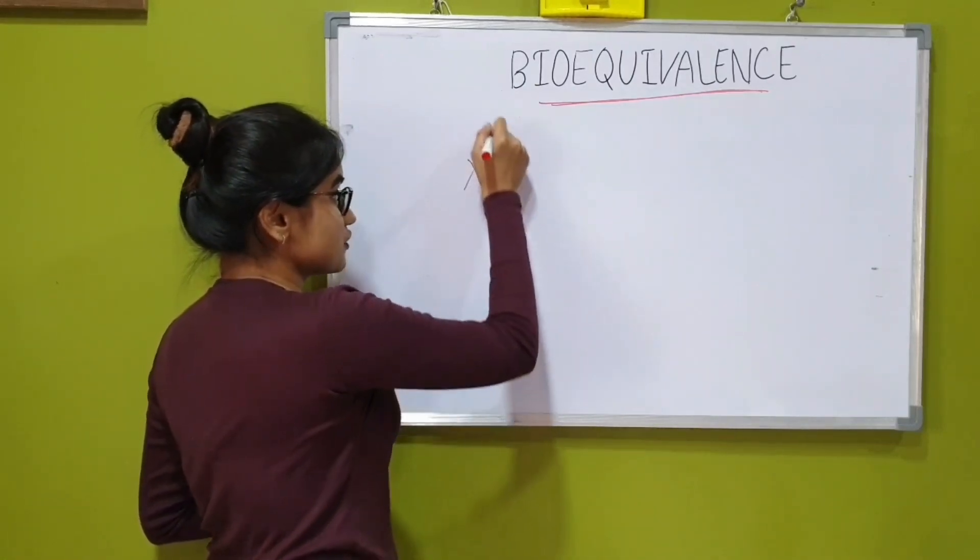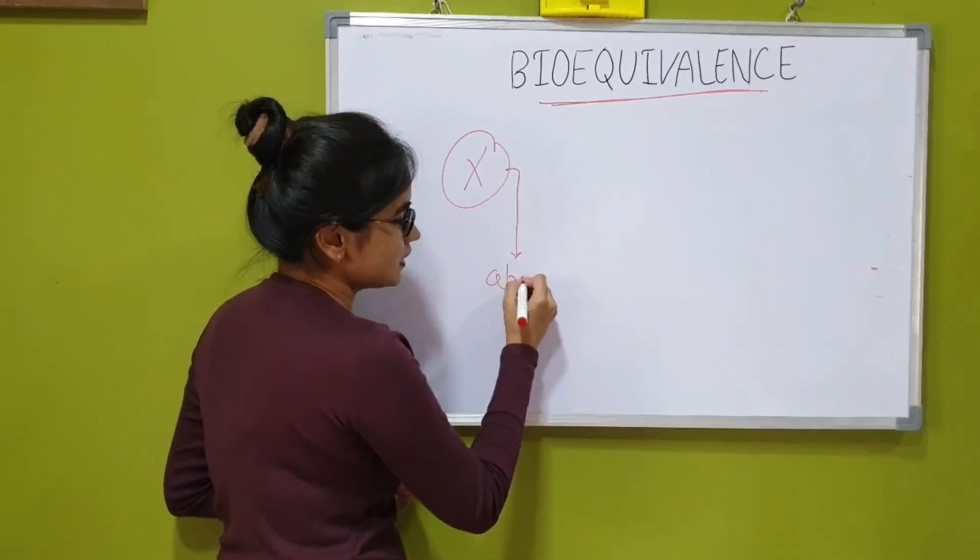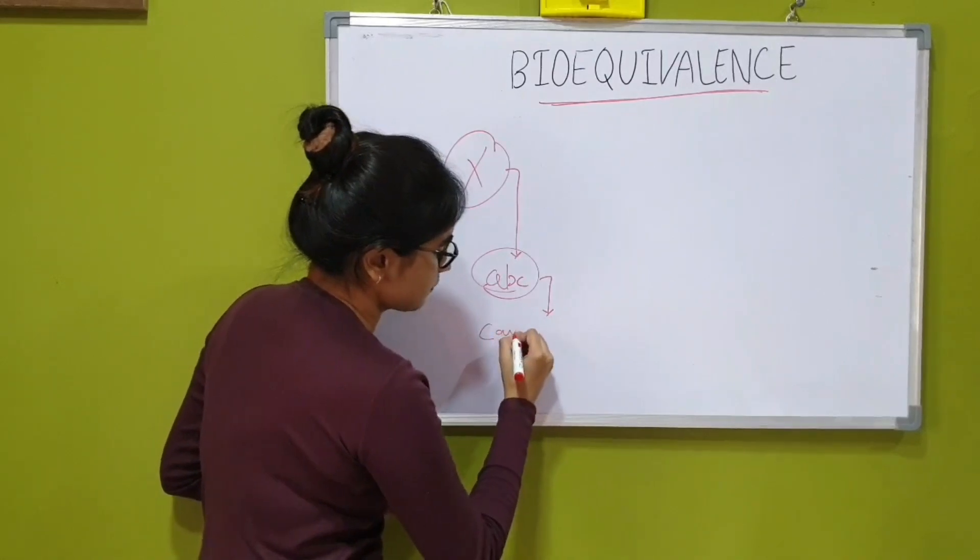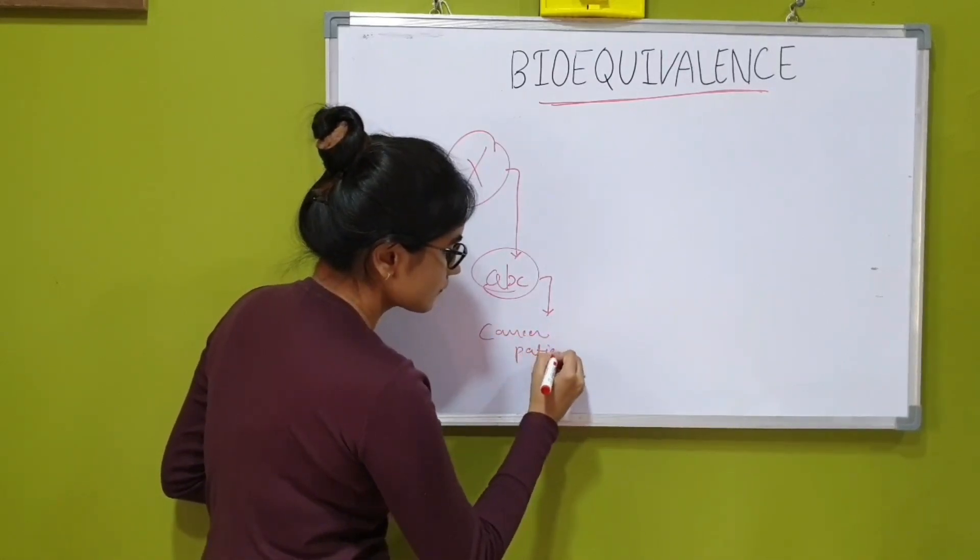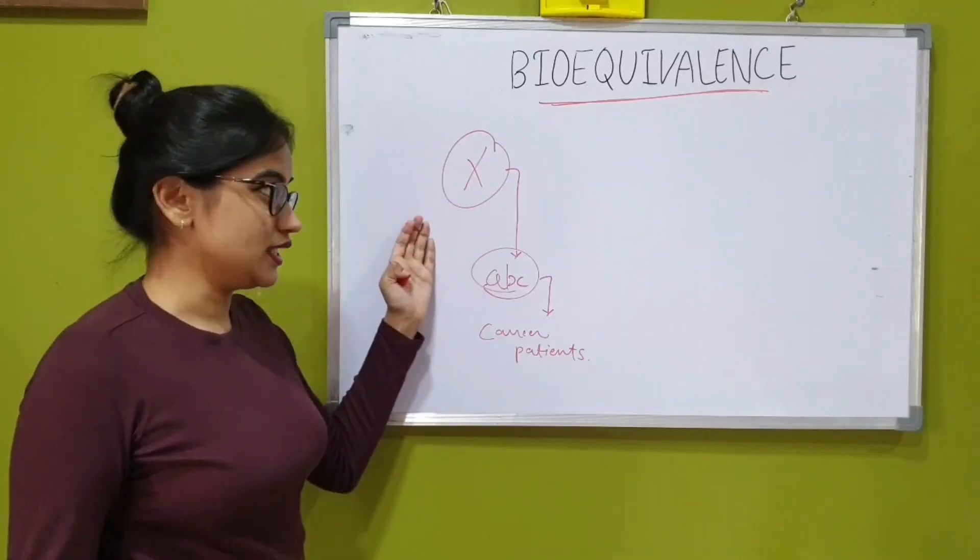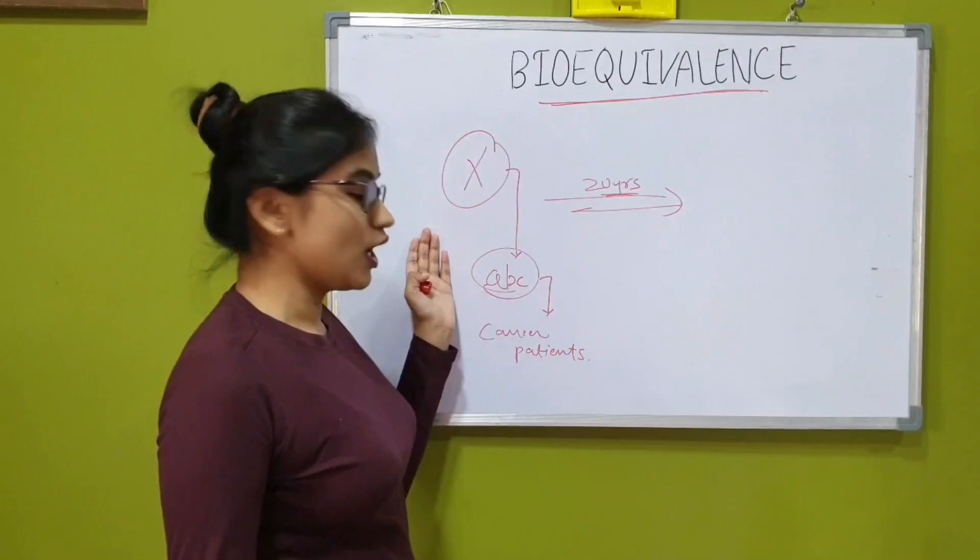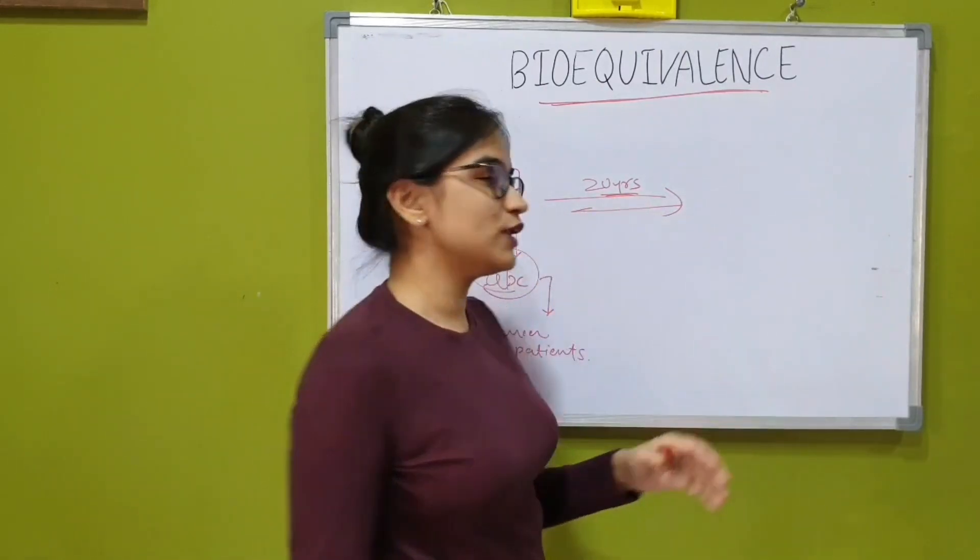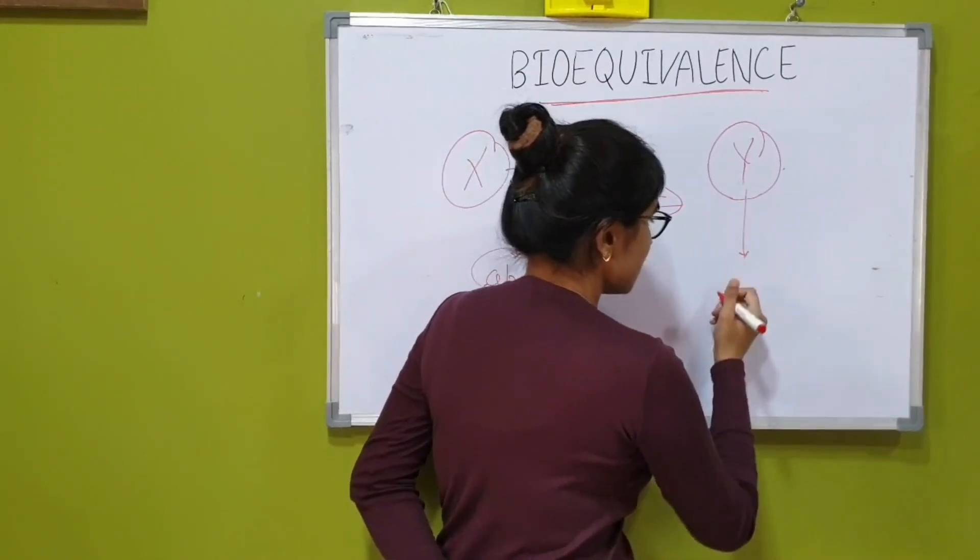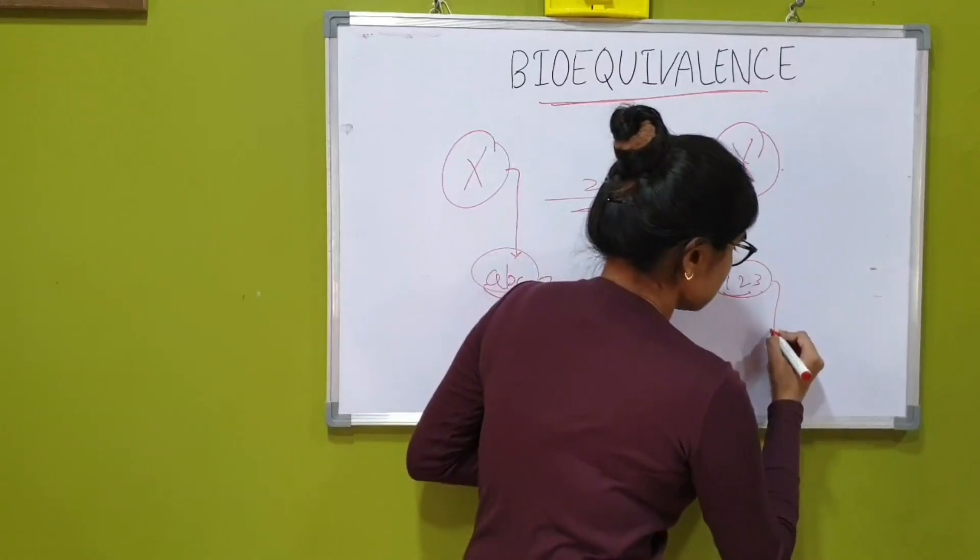Let's understand this by an example. Let's say a manufacturer X develops a chemotherapeutic drug ABC which proves to be of therapeutic importance in cancer patients. The patent of this drug will last for 20 years. After 20 years, when the same drug is developed by another manufacturer, say Y, let's give the name to this brand as 123 for the cancer patients.